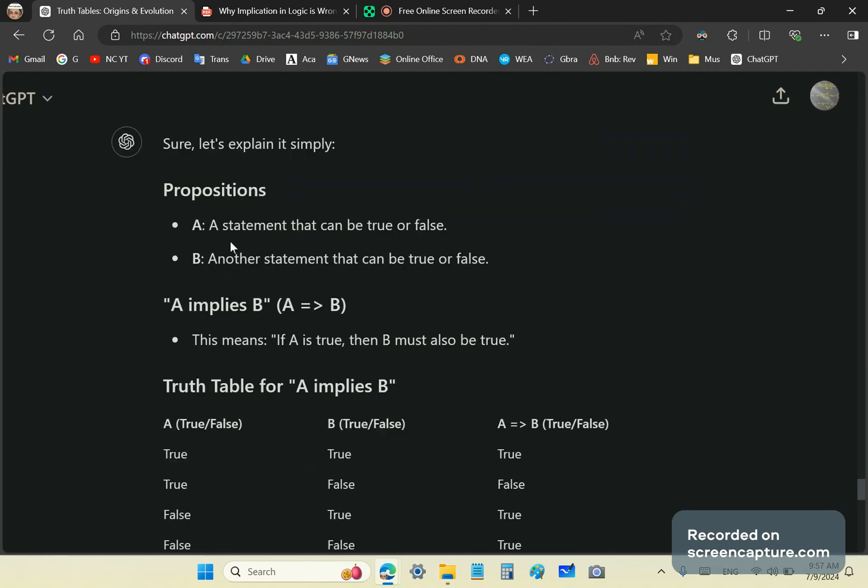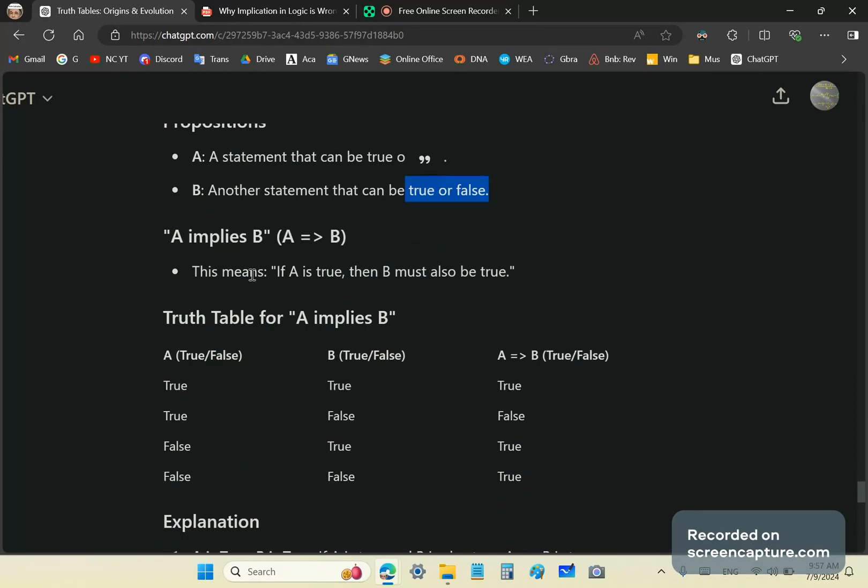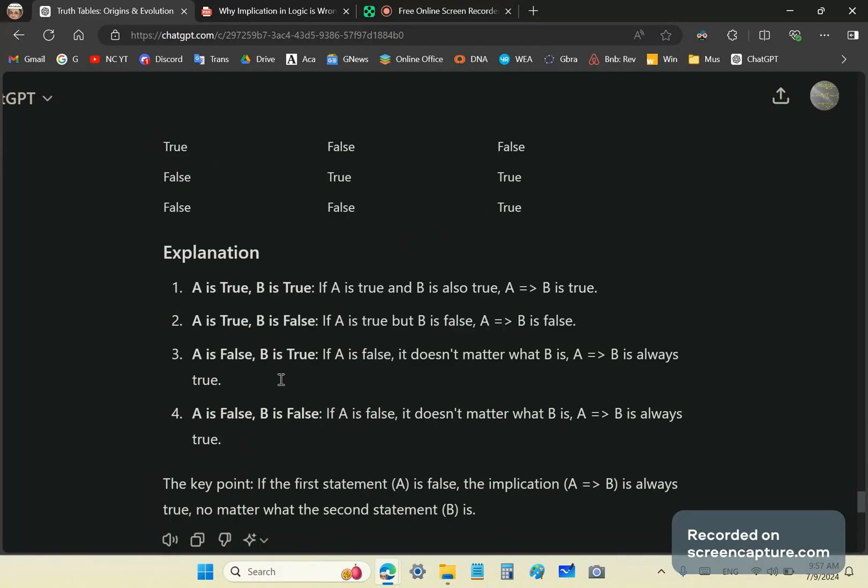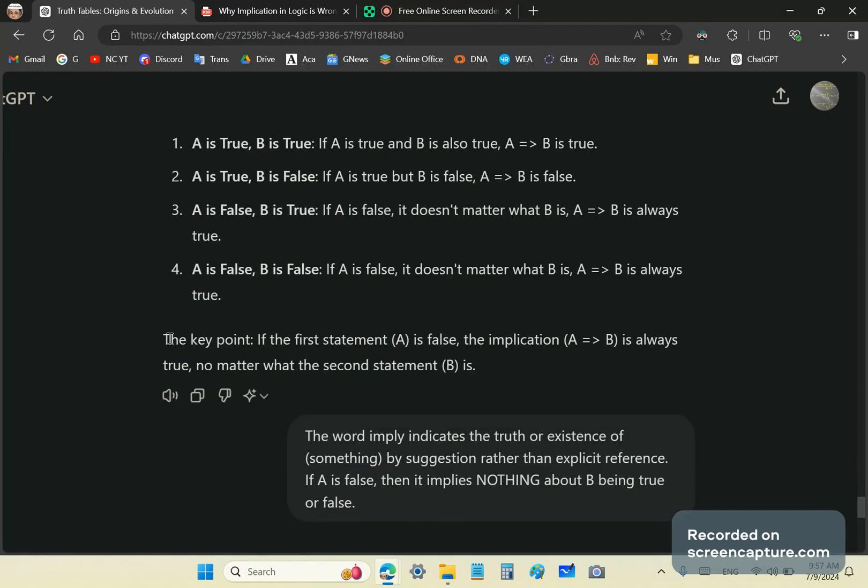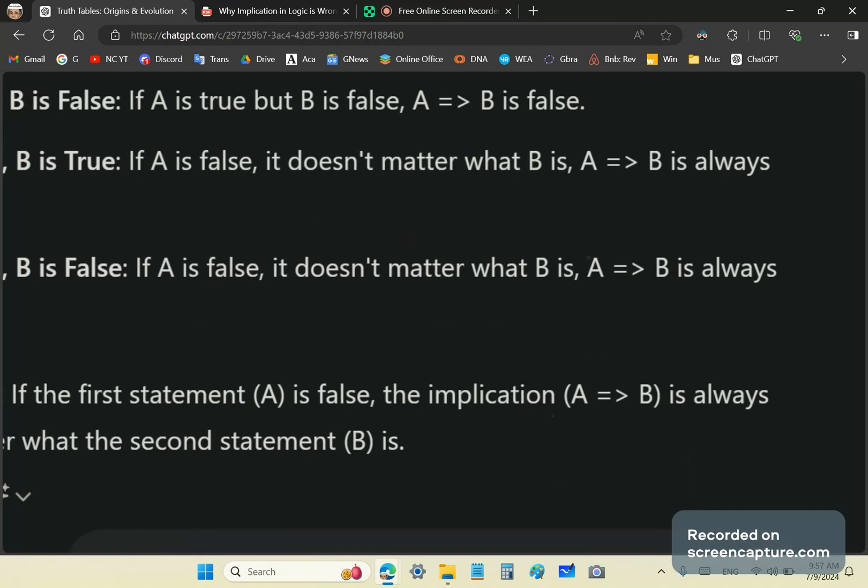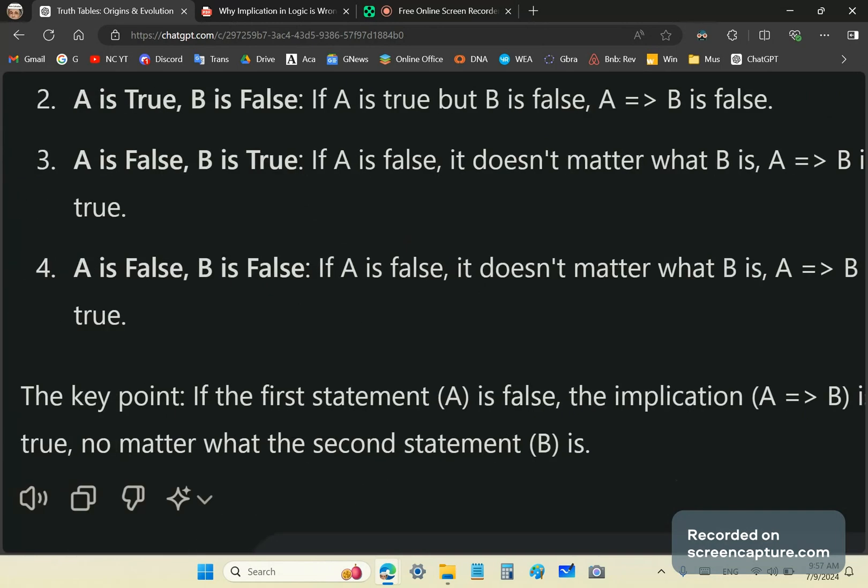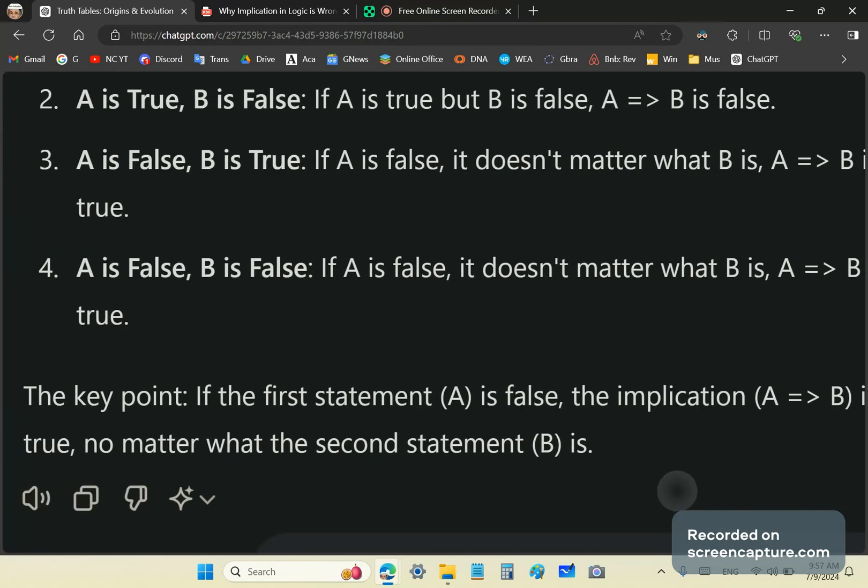It says A and B are both statements that can be true or false. Now, please pay attention to that. They can be true or false. This is problematic in mathematics. And you'll see why in a moment. So it comes along here and it repeats all the mainstream drivel, no problem. And then it says in summary, the key point is if the first statement A is false for the false false inputs, then the implication is always true, no matter what the second statement B is.